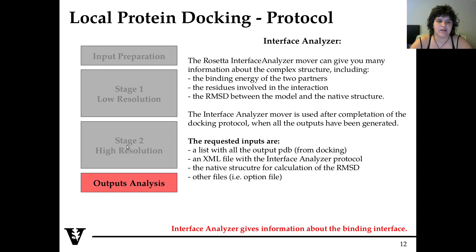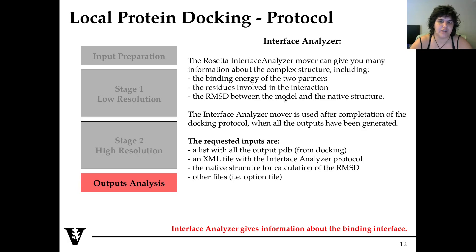Once you have done the docking and produced all the models, you need to analyze the output. For doing that, we have a mover inside Rosetta called Interface Analyzer, designed to analyze interfaces. We can calculate different things like the binding energy between two partners, the residues involved in the interaction, and the RMSD between the model you create and the native structure if you have one.